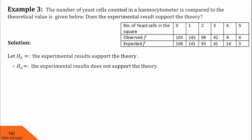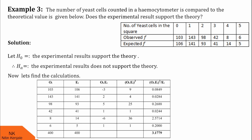Now, let us proceed to calculate test statistics. Chi-square is given by summation (Fo minus Fe) the whole square upon Fe. I am going to do this calculation in a tabular format. These are Fo values. These are Fe values. This is Fo minus Fe. Fo minus Fe the whole square. And (Fo minus Fe) the whole square upon Fe. This is the summation of (Fo minus Fe) the whole square. So, the calculated value of chi-square here is 3.1779.